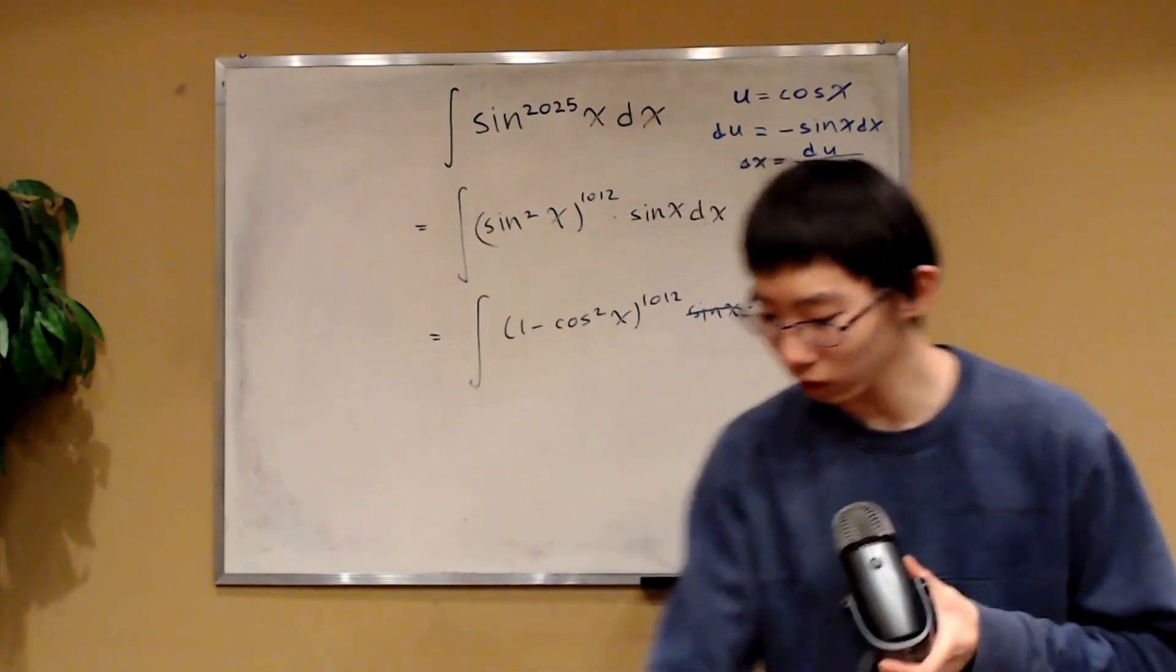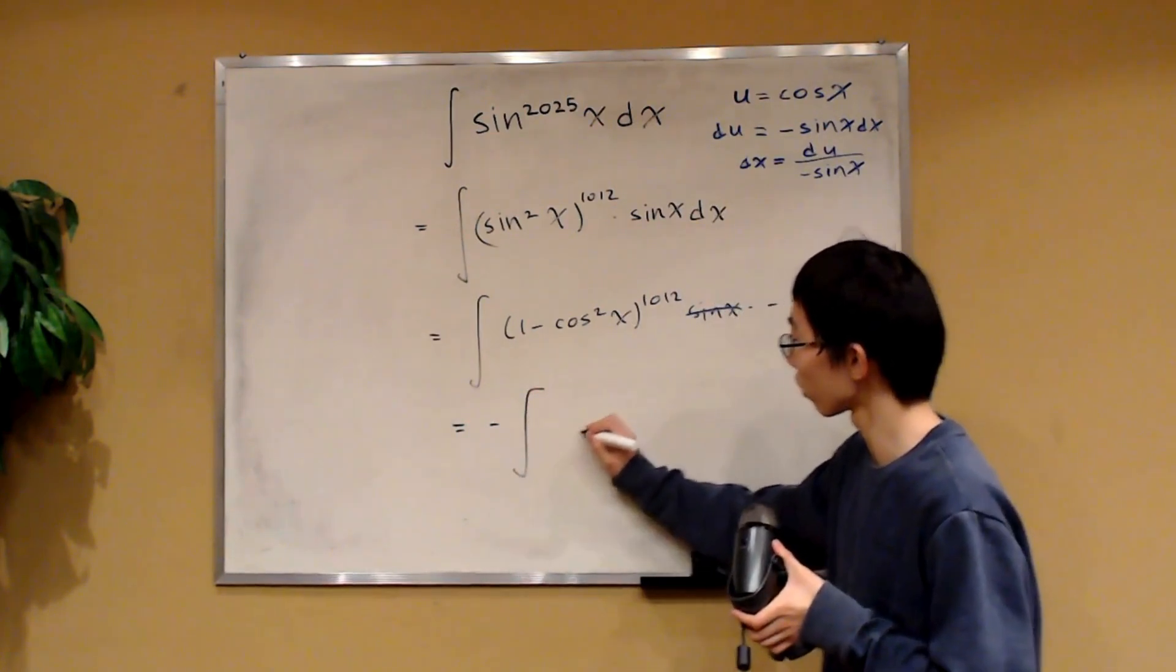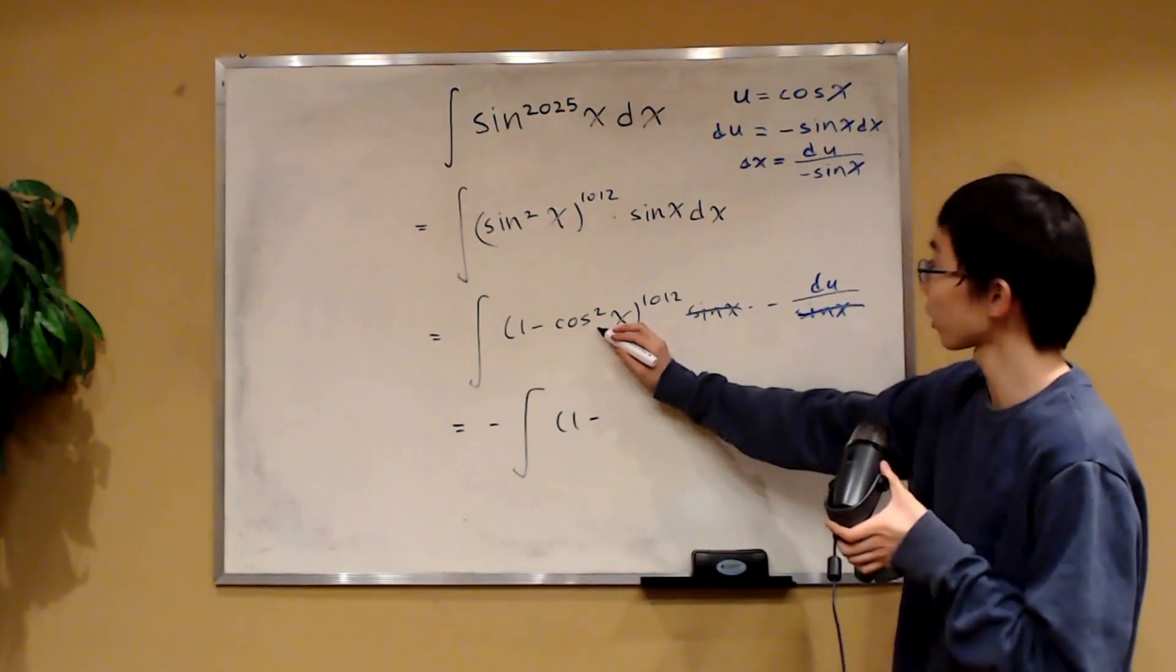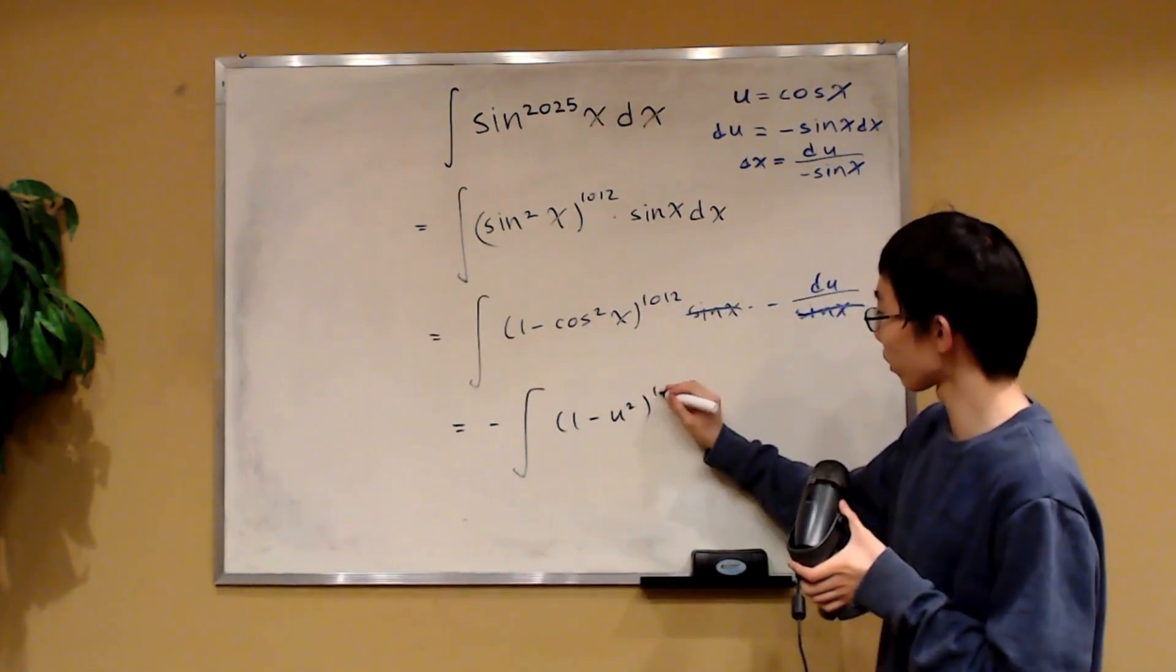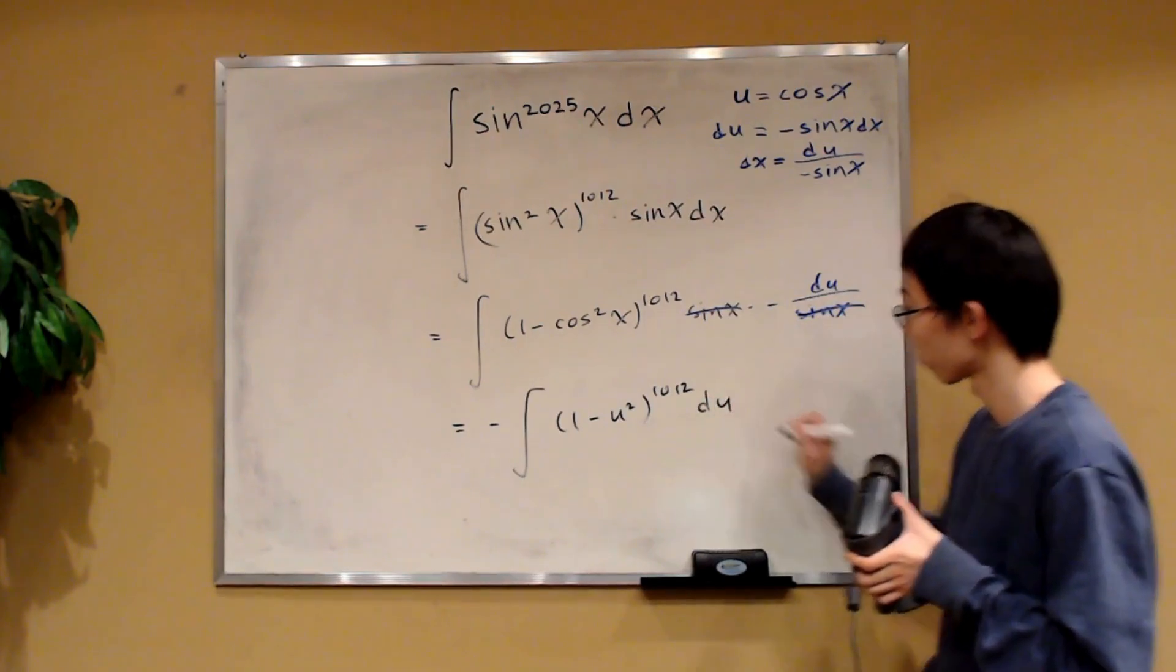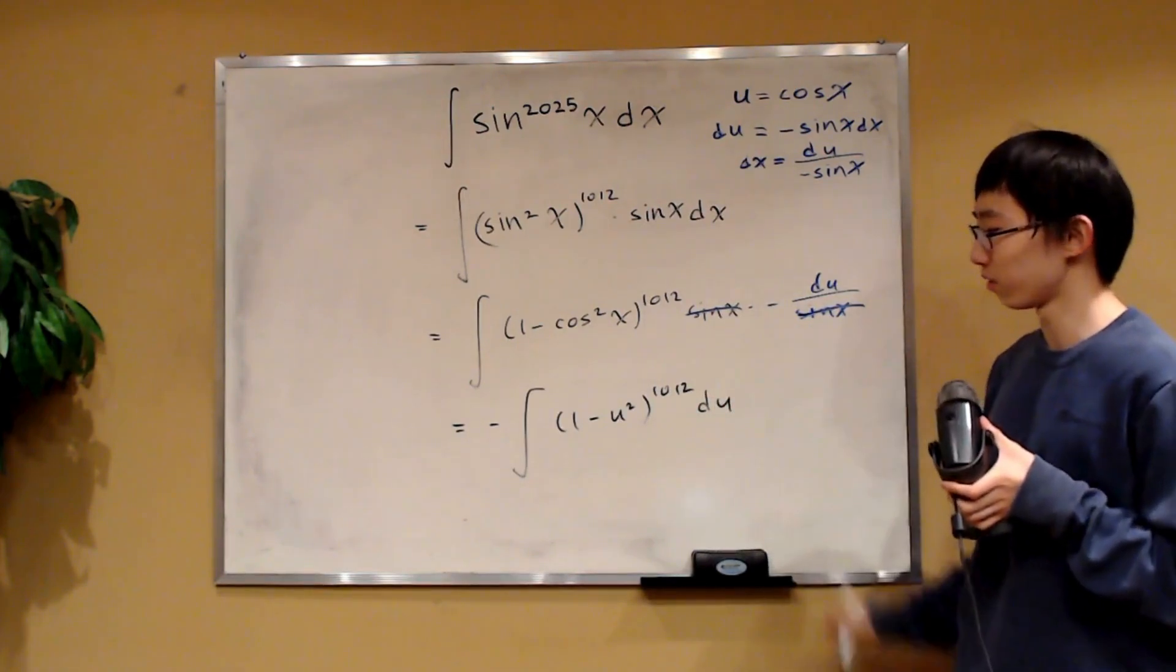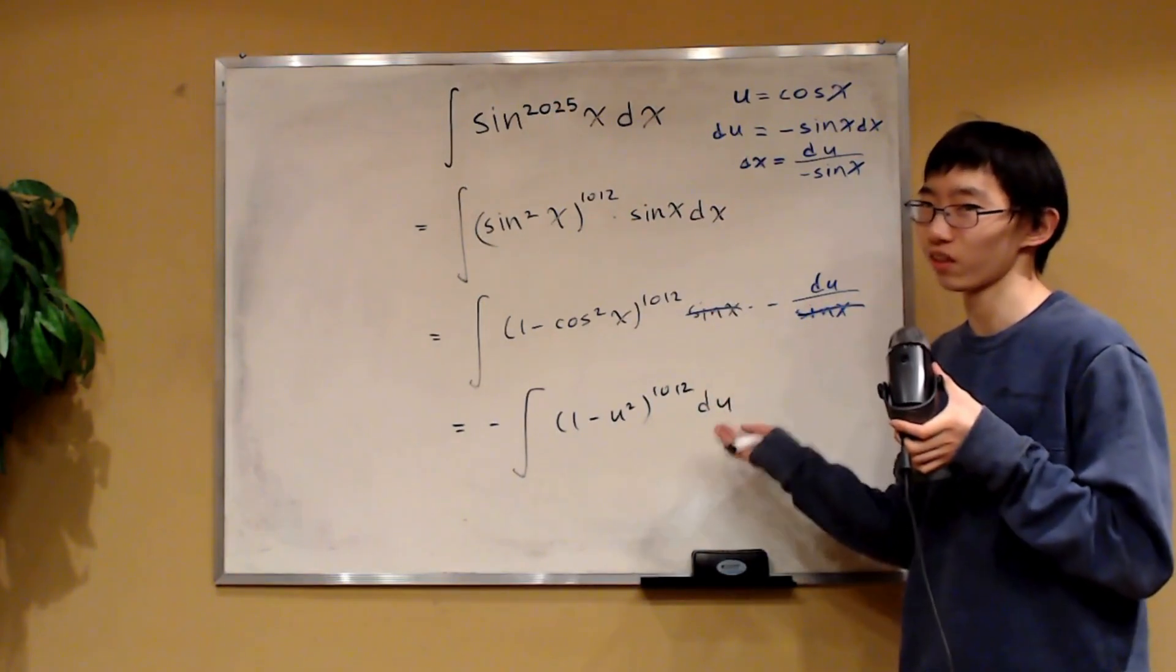And we can take this negative sign out of the integral. So this integral becomes the negative of the integral of 1 minus u squared to the 1012 power du. And would you look at that? This is simply a polynomial. We can integrate this very, very easily.